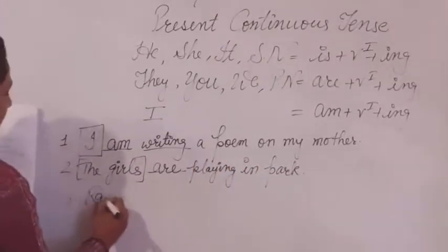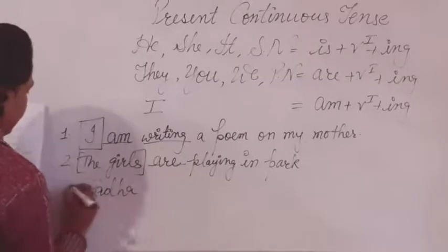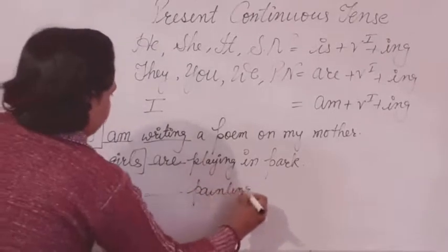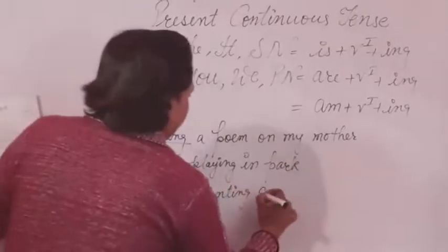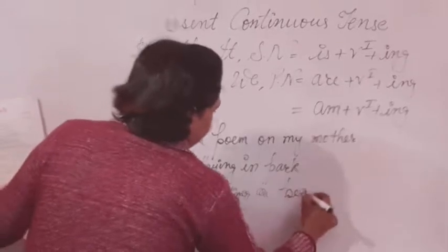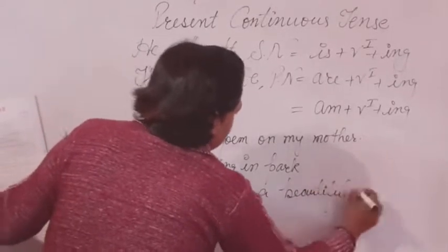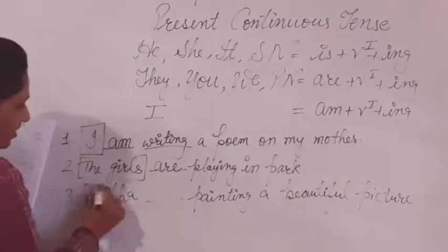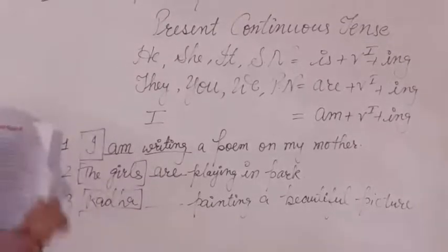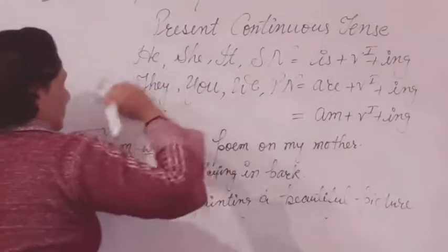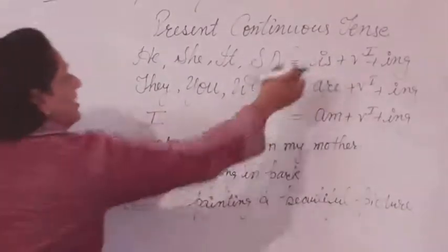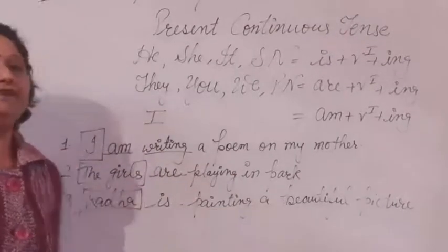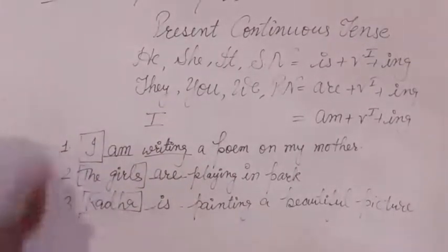Third sentence: Radha blank painting a beautiful picture. Here, the subject is Radha — the name of a person, which is a singular noun. For the singular noun, we will use IS as the helping verb. So the sentence becomes: Radha is painting a beautiful picture. Like this, we will apply all the rules.